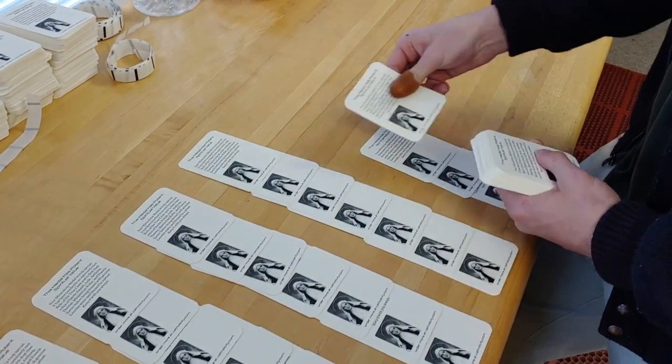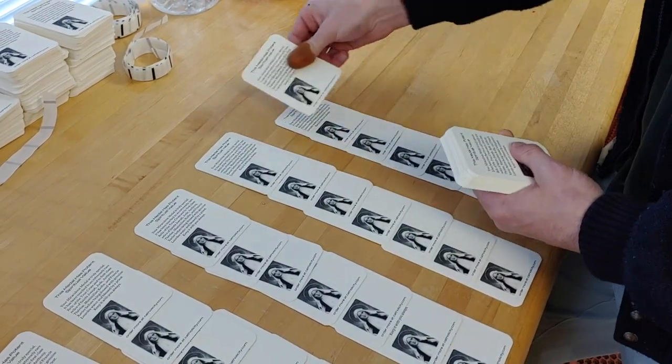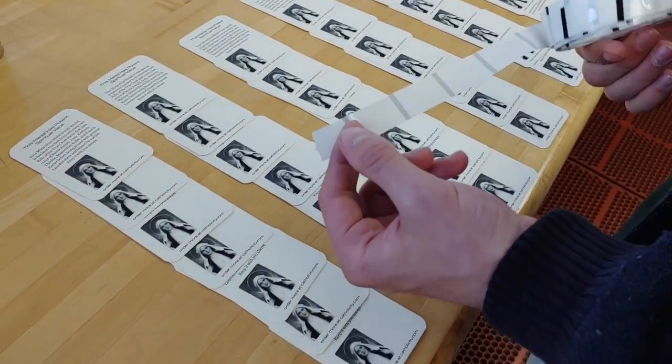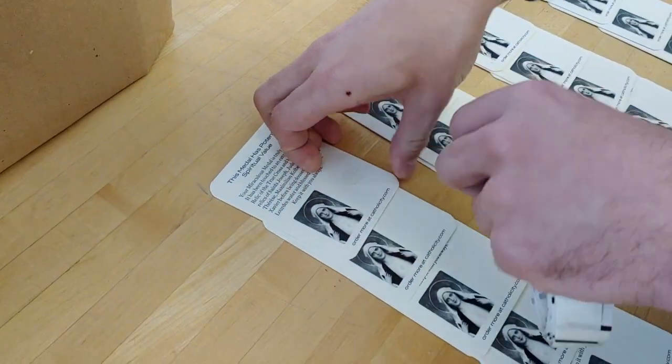The worker then lays out the cut prayer cards for the next step. This method ensures a high efficiency process. Next, using adhesive pads from a long strip called glue dots, the worker prepares the prayer cards for their blessed miraculous medals.